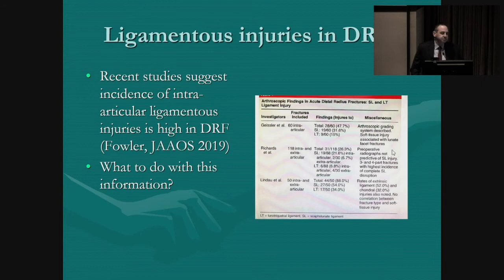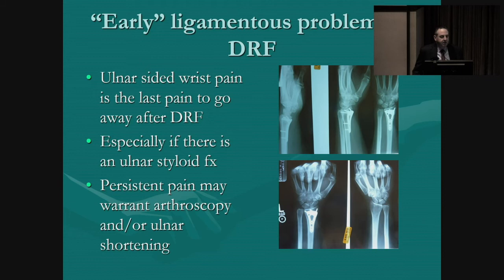The subject of ligamentous or soft tissue injuries in distal radius fractures has received a lot of attention recently. It turns out that if you look at people with intra-articular fractures, there's a pretty high incidence of ligamentous injury, which may account for some of the people that don't do well after ORIF — it can be as high as 50% in some studies. Early ligamentous problems include TFCC problems, and ulnar-sided wrist pain is probably the last pain to go away in distal radius fractures. Persistent pain may warrant arthroscopy.